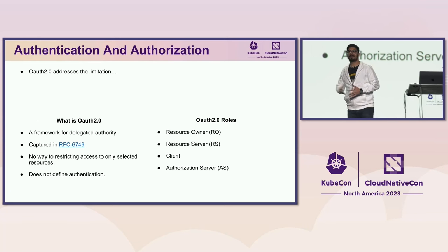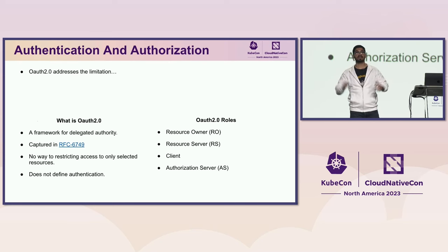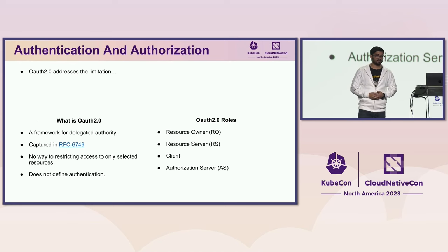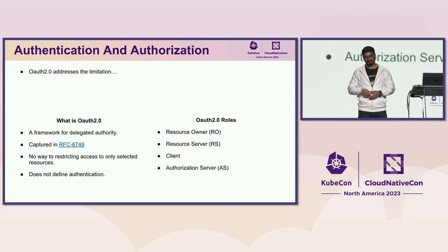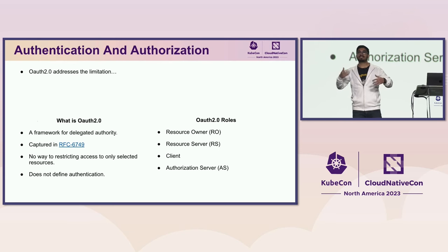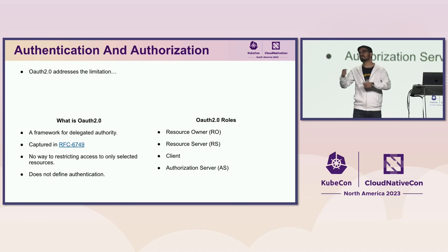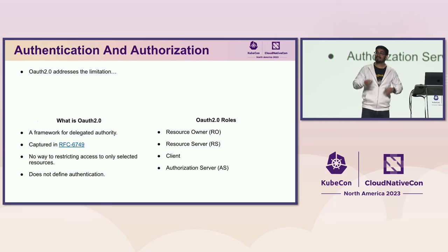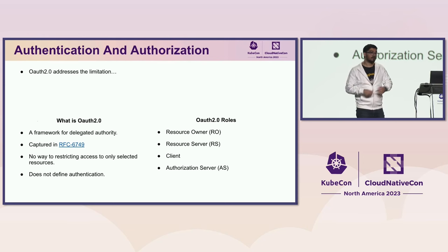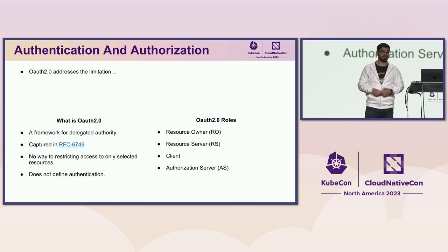And here comes OAuth 2.0. OAuth 2.0 is a standard based on RFC 6749 that tries to standardize delegated authorization. There are four roles: resource owner, resource server, client, and authorizing server. The resource owner owns the protected resources. The resource server is where you access those resources. The client is someone the resource owner delegates authority to. And the authorizing server helps you get an access token to access the protected resources.